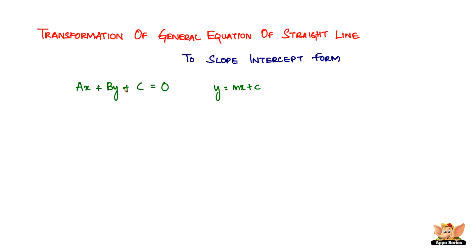So how do you convert the general equation of a straight line to the slope-intercept form? You can see that y is on the left side and the rest are on the right side. So do the same thing here — select the y term; by is the y term. Keep that on the left side and push the rest to the right-hand side, so you get by equals minus ax minus c.